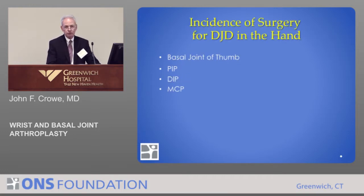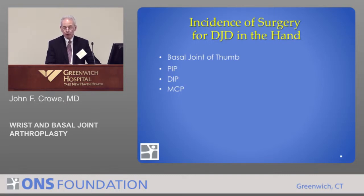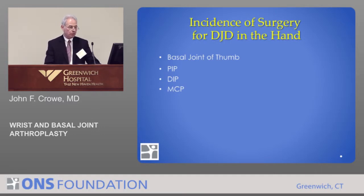However, the surgery varies. Surgery is much more common in the basal joint of the thumb, next in the PIP joint, and the DIP joint — which is the most common form of arthritis — is a distant third. We rarely operate on the DIP joint except under very specific indications.